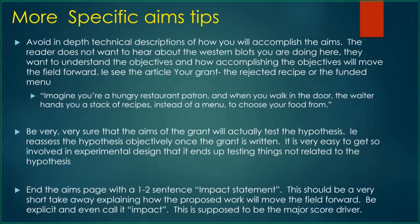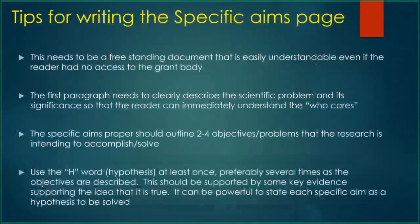The score of an NIH grant is called the impact score, and it's a combination of everything: the scientific problem, the approach, your skills as an investigator, whether you have the patient base, whether your environment will allow the work to be successful at the highest levels — all of those things come together in that final impact number.